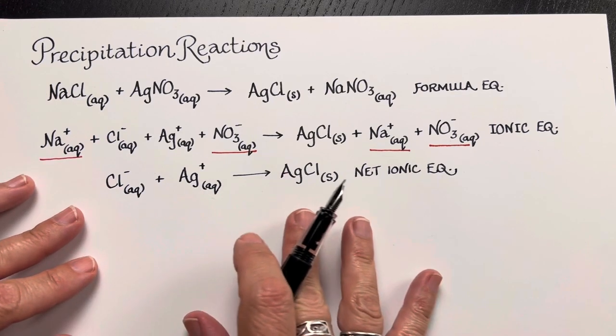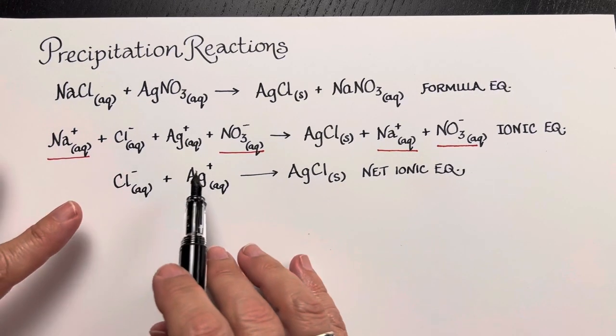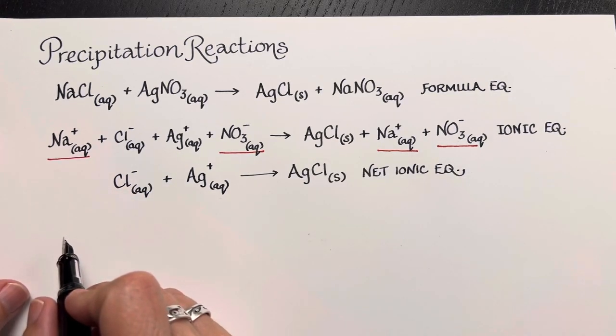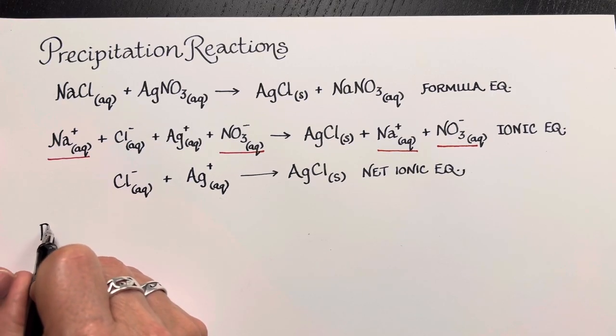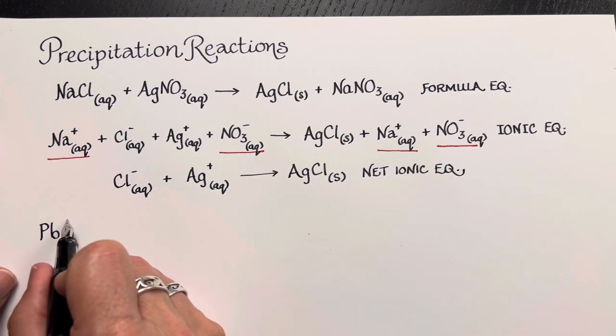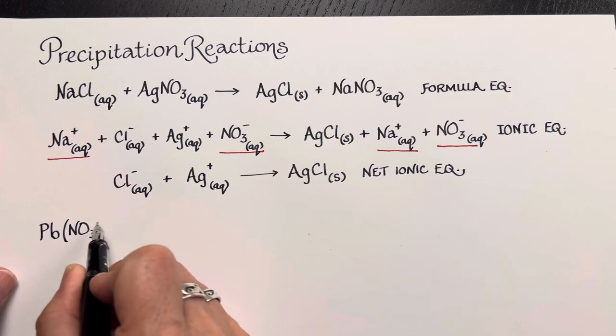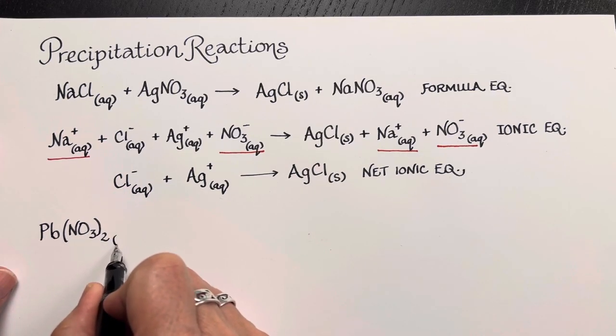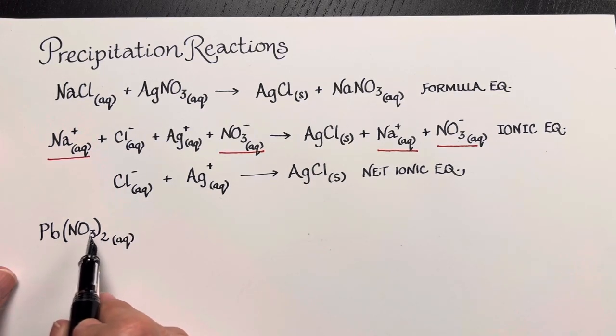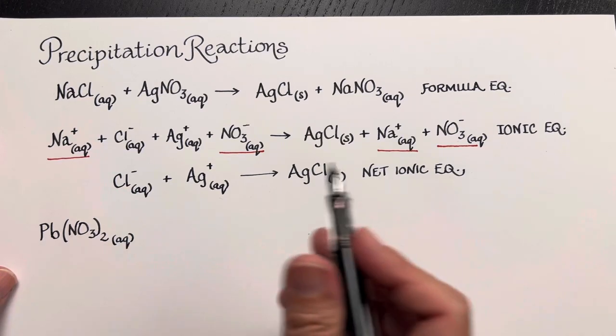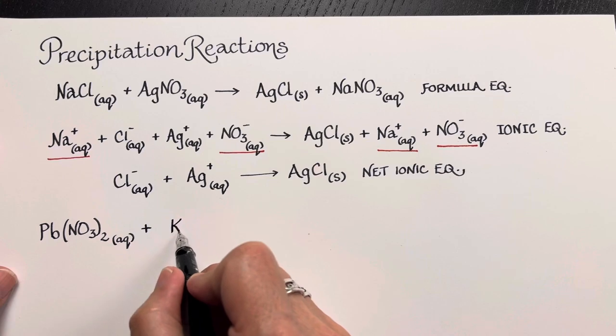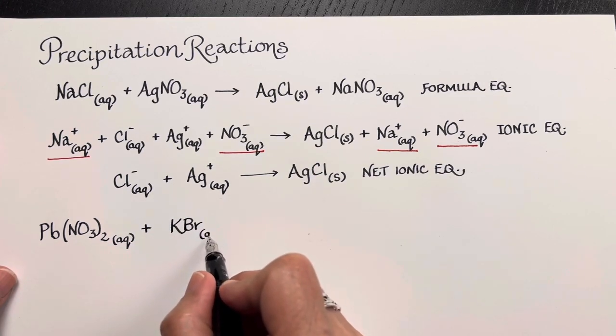I wanted to show another example that has a little bit more complex stoichiometry. One that we could show could be, for example, let's look at lead nitrate. And this specifically is lead 2, meaning its oxidation number is plus 2. So lead 2 nitrate then has 2 nitrates in the formula equation since nitrate is minus 1 and this lead is plus 2. So this could be reacting with potassium bromide, KBr, for example. This is also aqueous.